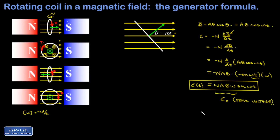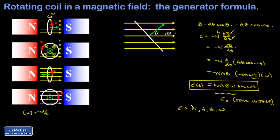The coefficient of sine ωt can be called ε₀, the peak voltage. Several qualitative points about this formula: if N is bigger, the induced voltage is bigger — more turns means more loops experiencing flux changes. A bigger area produces bigger flux changes and therefore bigger induced voltage. A bigger magnetic field increases the flux and flux changes, giving bigger induced voltage. A bigger angular velocity means the fluxes change faster, making the delta-t's smaller, so the peak voltage is proportional to all of N, A, B, and ω.